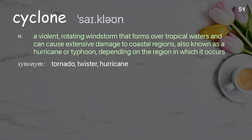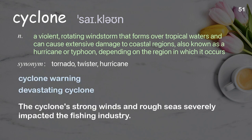Cyclone: A violent, rotating windstorm that forms over tropical waters and can cause extensive damage to coastal regions; also known as a hurricane or typhoon, depending on the region in which it occurs. Examples: Cyclone warning, devastating cyclone. The cyclone's strong winds and rough seas severely impacted the fishing industry.